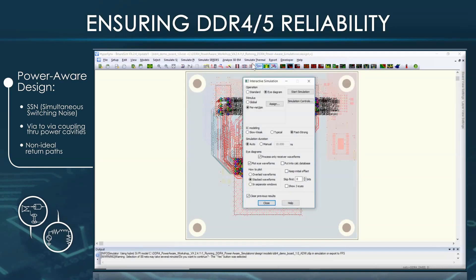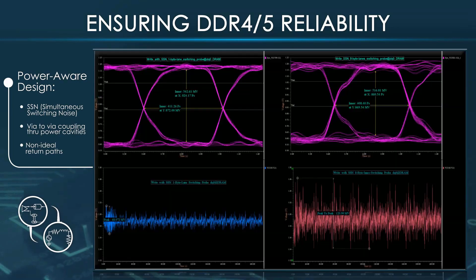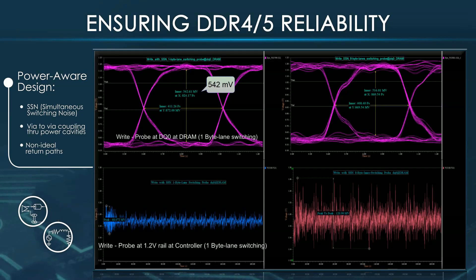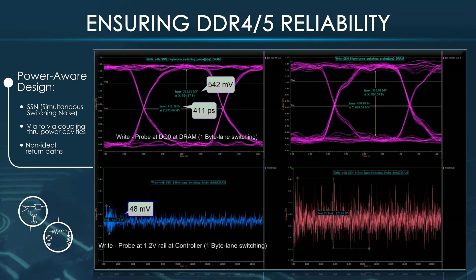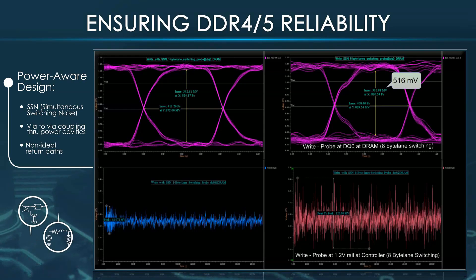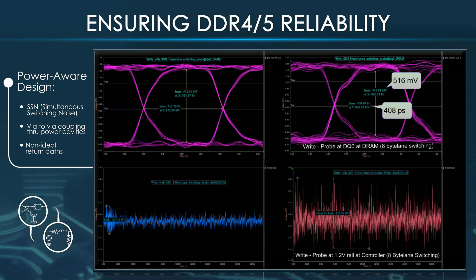Now we have 8-byte lane selected — let's simulate again and compare the results. On the left is the eye at DQ0 at the DRAM and the 1.2-volt rail at the controller while 1-byte lane was switching: eye height is 542 mV and eye width is 411 picoseconds, with noise on the 1.2-volt rail of about 48 mV. When 8-byte lanes were switching, the eye has collapsed — eye height reduced to 516 mV and eye width to 408 picoseconds, and the noise on the 1.2-volt rail increased from 48 mV to 120 mV.